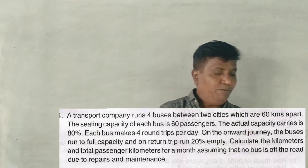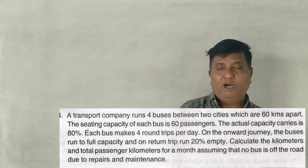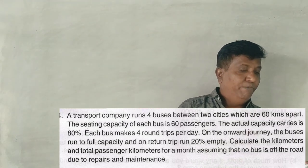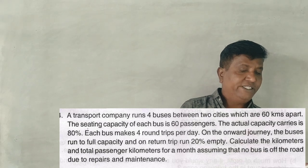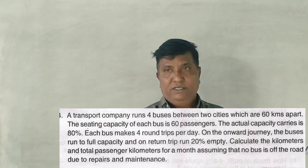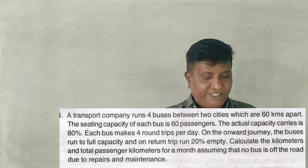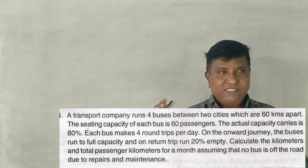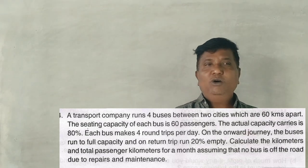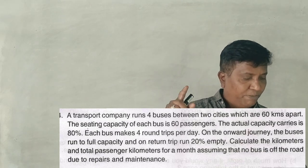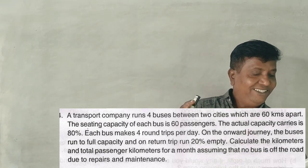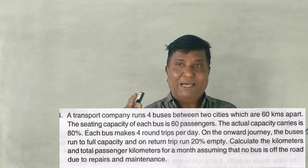A transport company runs 4 buses between two cities which are 60 kilometers apart. The seating capacity of each bus is 60 passengers.